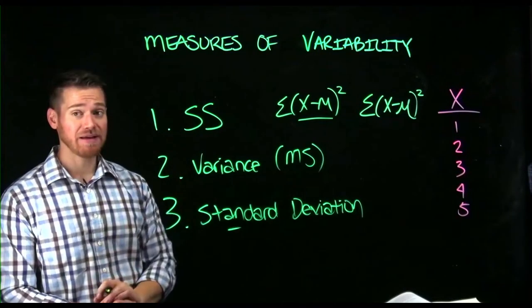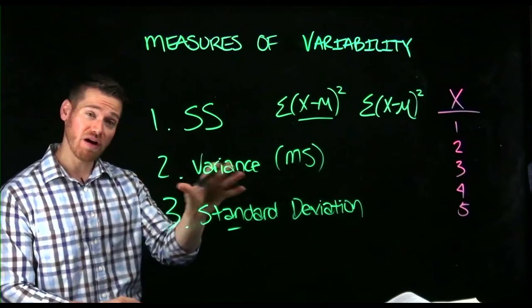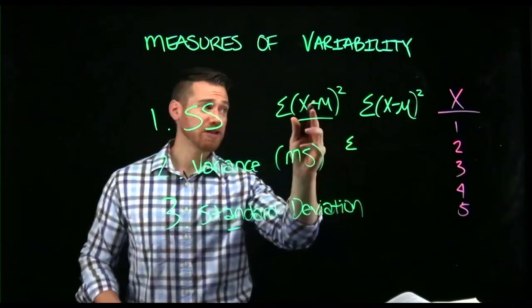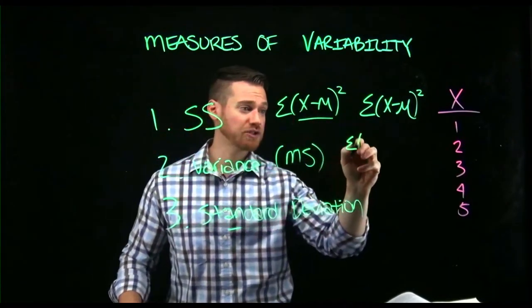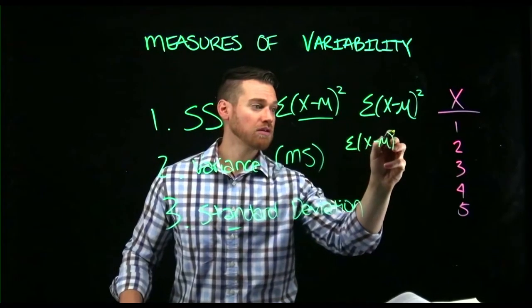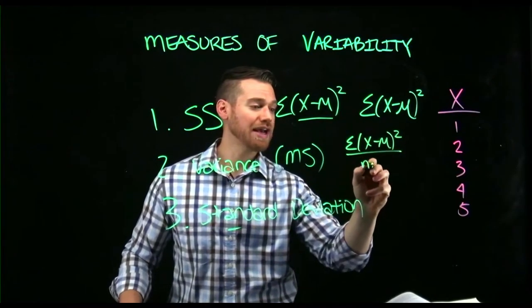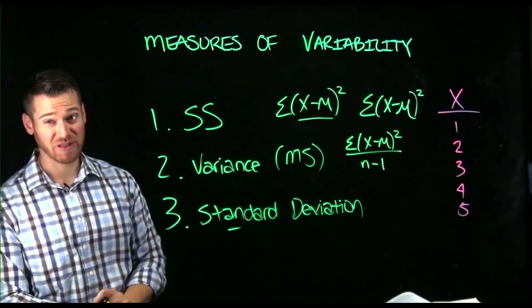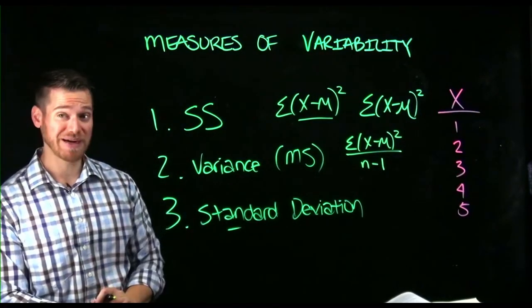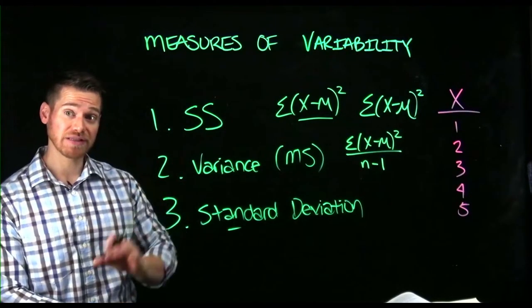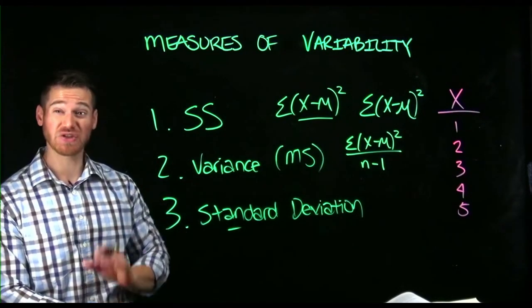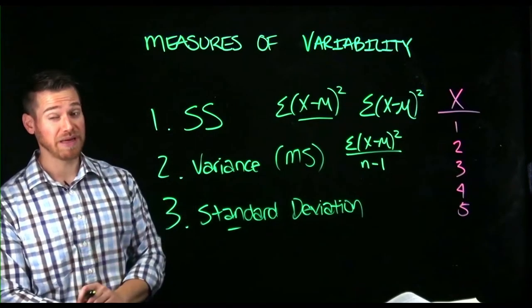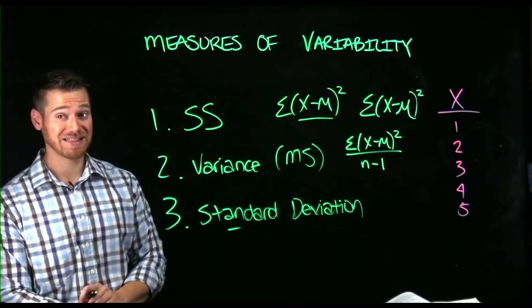Now, we would use that as the numerator of variance. Variance is going to be, and I'm going to use here first the sample notation, the square deviations over n minus one for a sample. Now, here is where you get a difference. For a sample, you use n minus one, which allows variance to be an unbiased estimate because you're estimating the variance. You don't know the true variance. And n minus one makes this an unbiased statistic estimate.